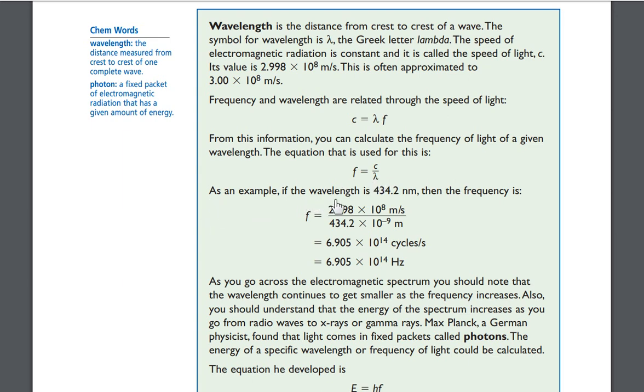As an example, if the wavelength is 434.2 nanometers, then the frequency is, well, here's the formula for frequency. Remember, frequency is speed of light divided by wavelength. And when you punch that into the calculator, you get 6.905 times 10 to the 14th power cycles per second. Remember, cycles per second, that's what hertz is. So, the frequency is 6.905 times 10 to the 14th power hertz.